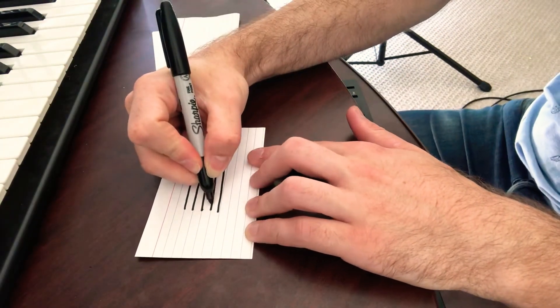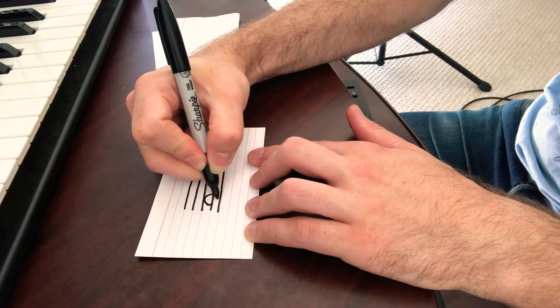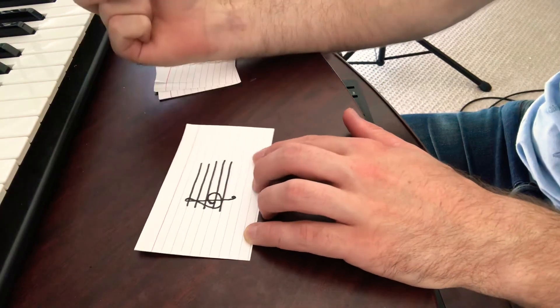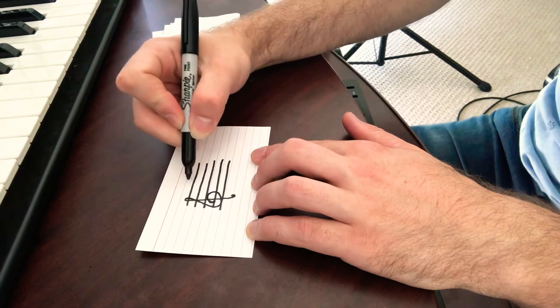Start making a circle around your G, that's your second line. You're going to go up to the B, come down to E, loop around, make a loop on your F, come down and finish that treble clef off, and then start by making a circle.